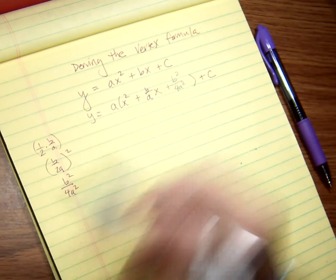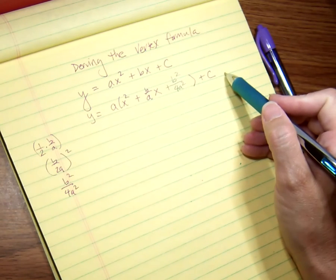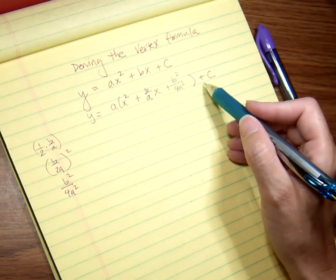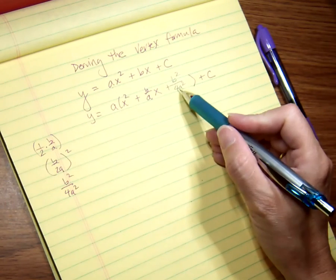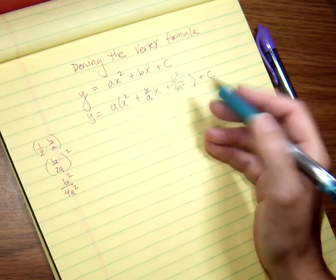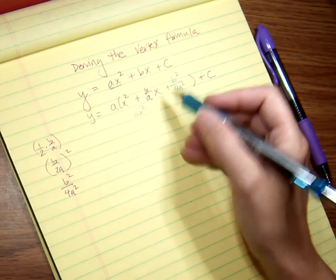I'm going to add B²/4A². Now normally we would do it to the other side, but since I can't cross this equal sign, whatever I add I also must subtract, so that I'm adding zero to this side of the equation.